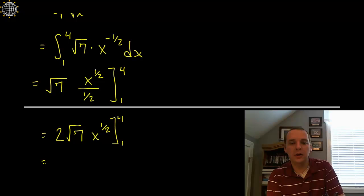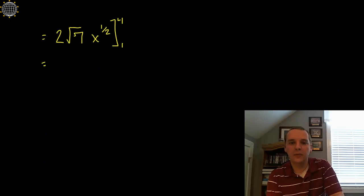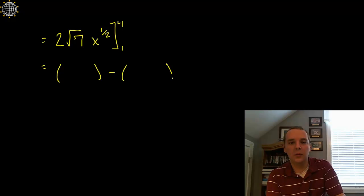So we will plug in a four and we'll plug in a one and we'll subtract these two quantities. So let's do that. If you plug in a four, the square root of four is two, two times two is four root seven. So if you plug in a four you get four root seven.